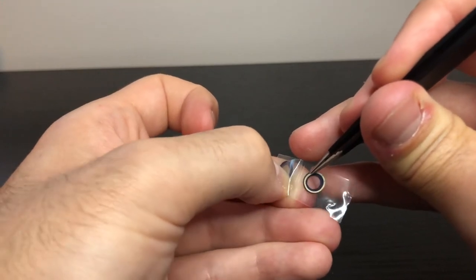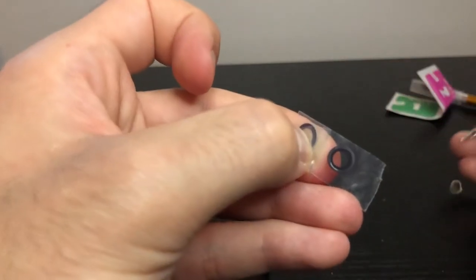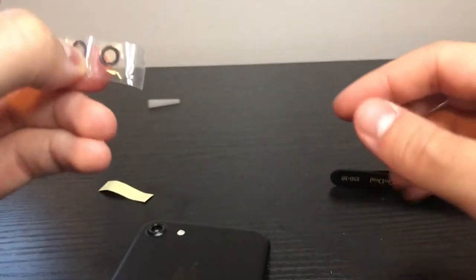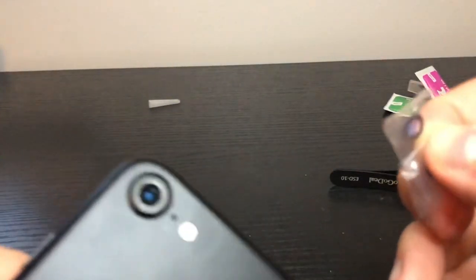So once you place it down, you can kind of position it to be in the center. It doesn't really have to be. Again, I didn't mind. And then once you peel it off, you can see the glue is actually a really nice, really pretty thick layer.